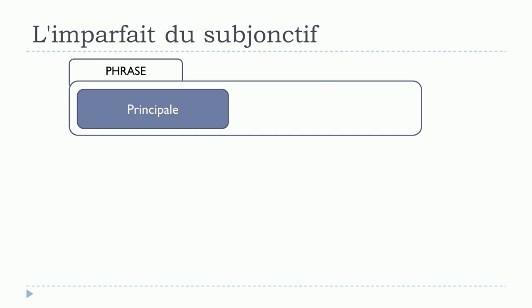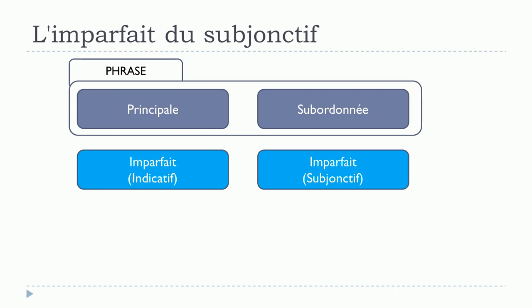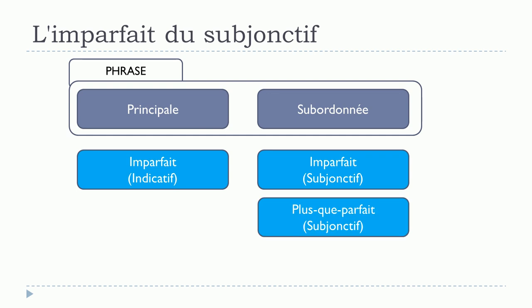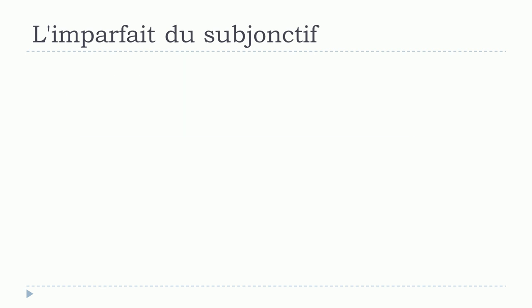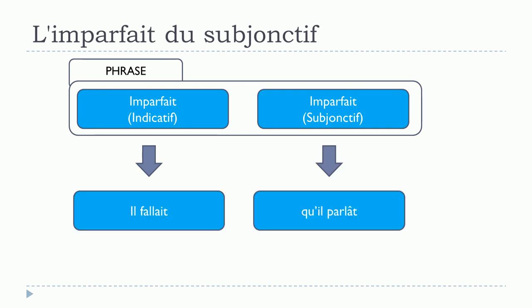Now let's look at sentence structure. We have la principale and la subordonnée. If we have l'imparfait de l'indicatif in la principale, then normally we should put l'imparfait du subjonctif or le plus-que-parfait du subjonctif in la subordonnée. For example: il fallait qu'il parlât — in the main clause you have il fallait, which is l'imparfait de l'indicatif, and in the subordonnée you have qu'il parlât, which is l'imparfait du subjonctif.